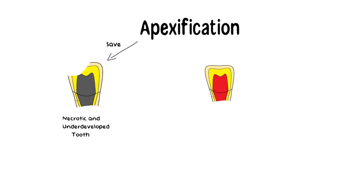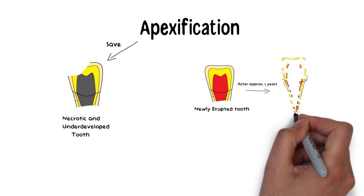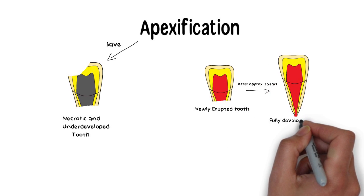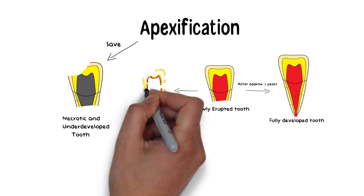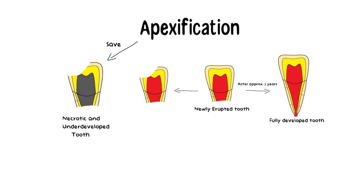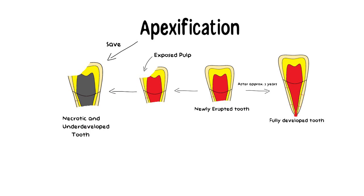When a tooth erupts in the oral cavity, its roots aren't developed yet, and it usually takes about 3 years for the root to fully develop. But if this developing tooth becomes infected during these developing years and becomes necrosed, then the growth of the tooth will cease, and there will be an underdeveloped tooth with a wide apex — known as an open apex.